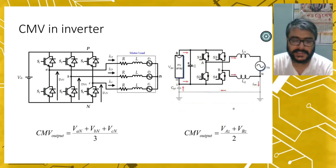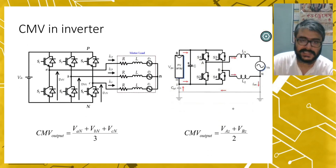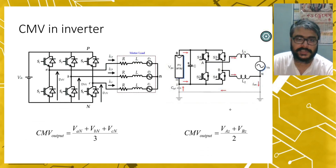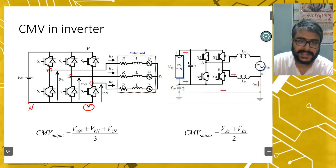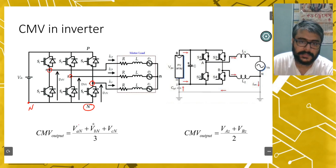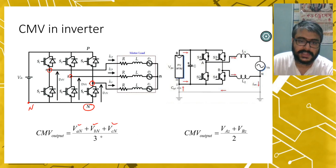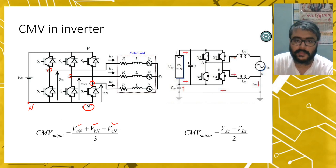In a three-phase inverter or a single-phase inverter, the common mode voltage is calculated as follows. Let's say this terminal is 0n, and the three output terminals are A, B, and C. So the voltages are VAN, VBN, and VCN. If we add all three of them and divide by three, we get the output common mode voltage, CMV output.